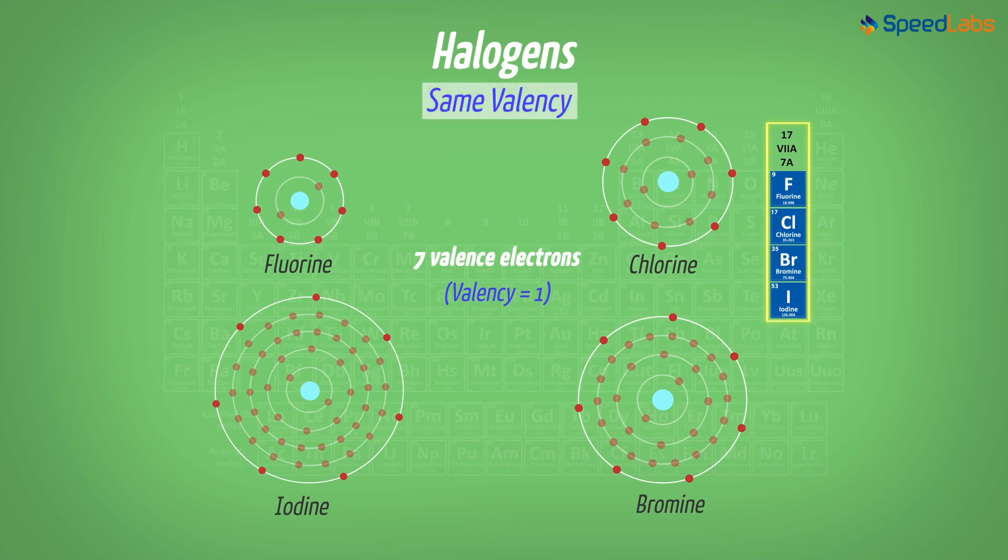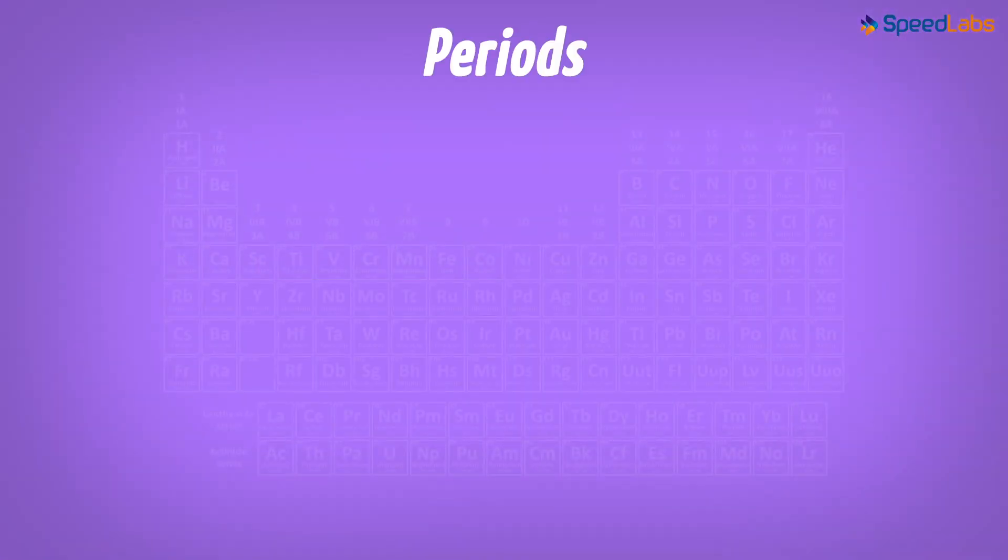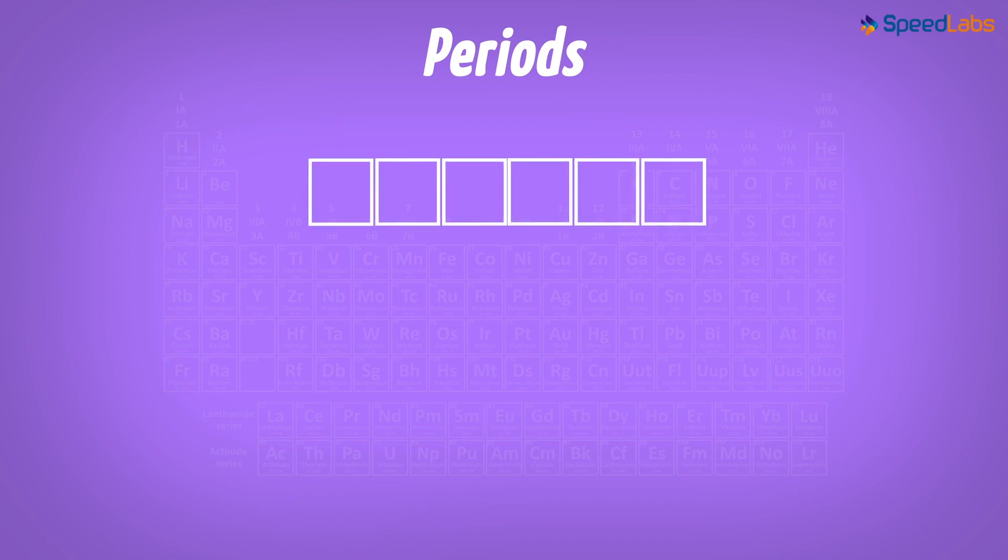This was about valency in the groups. Now let's talk about the valency across the periods. If we notice the valency of elements belonging to the same period, we find a difference. And why does this happen?